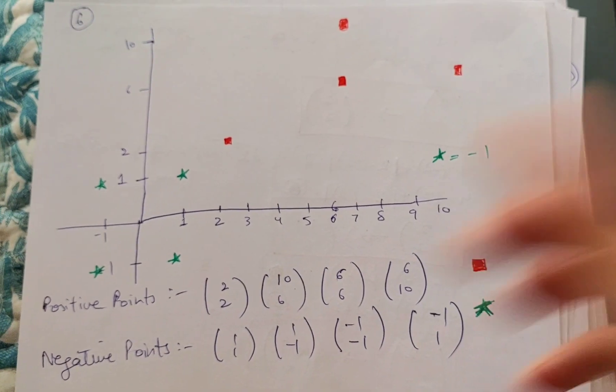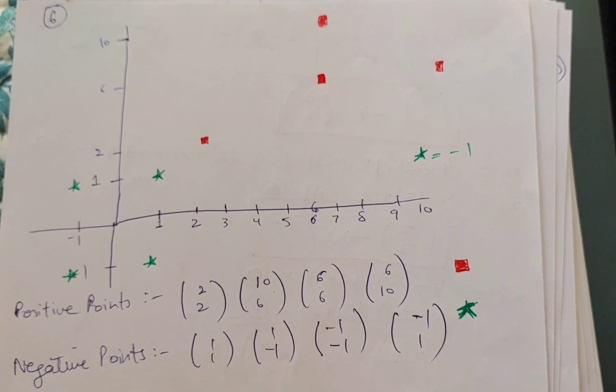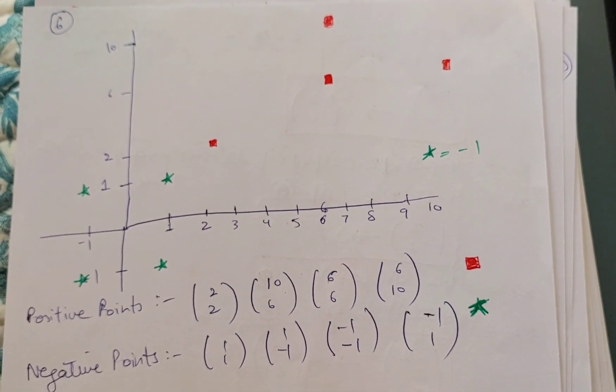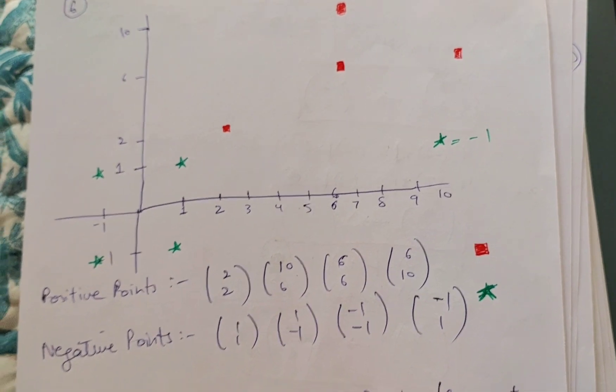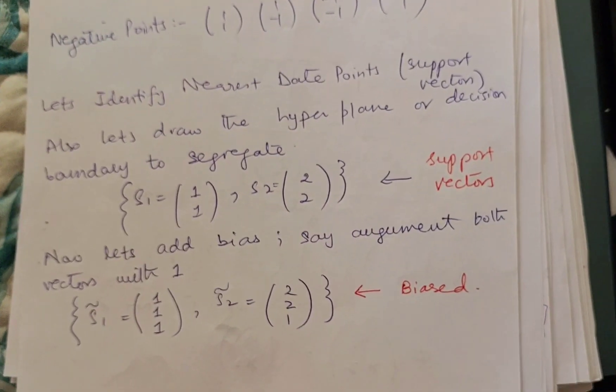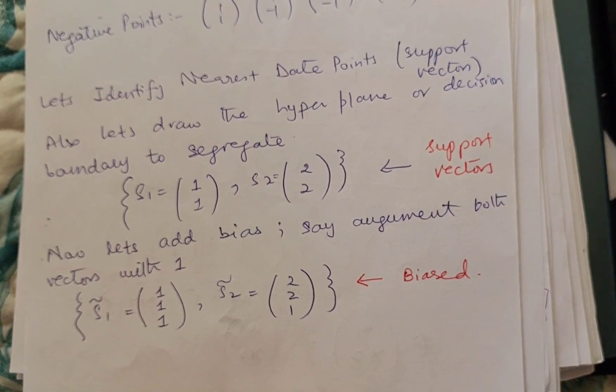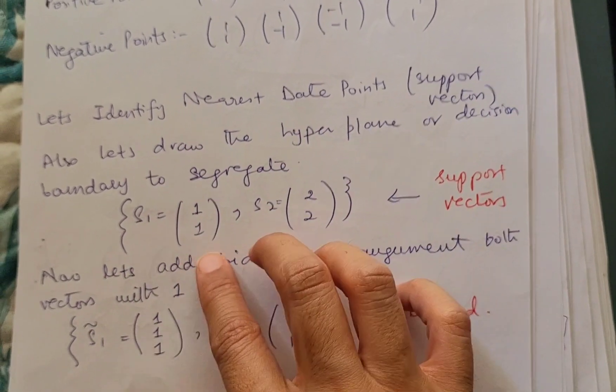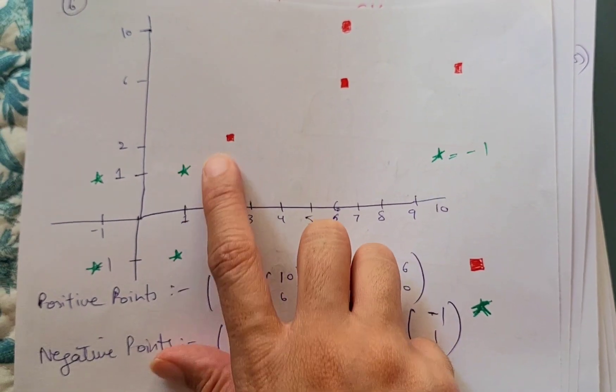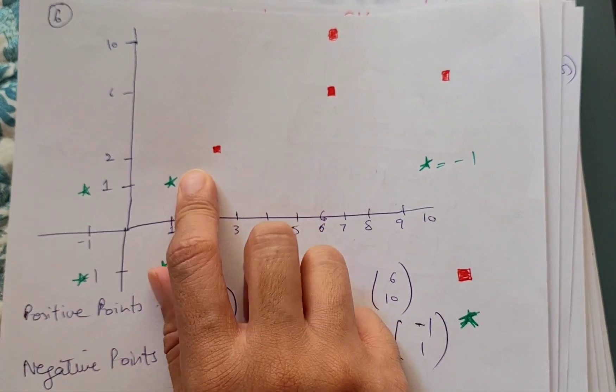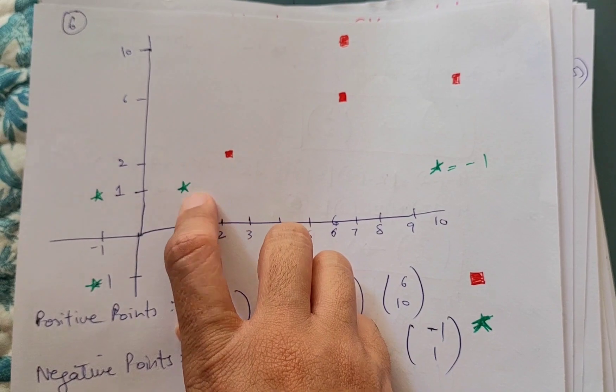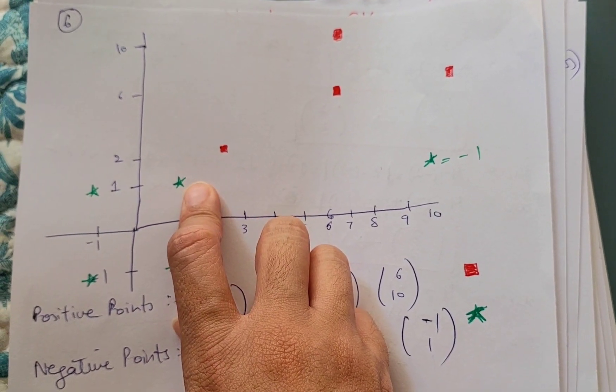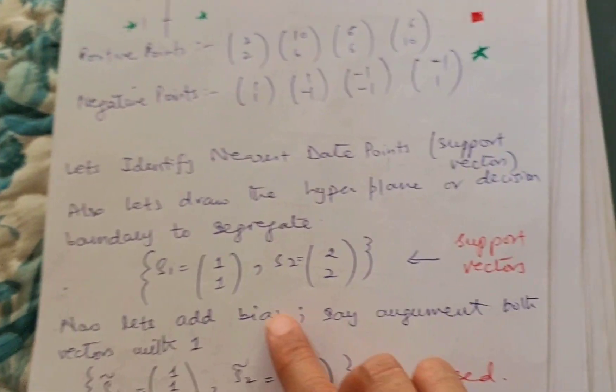And (6, 10), so this point is representing 6 on the x-axis and 10 on the y-axis. So this is the new representation of the positive labeled points, and the negative label points are still there. Now can you imagine what can be the decision boundary which can segregate these data points so well? First of all, let's identify—maybe you can be asked what are the support vectors.